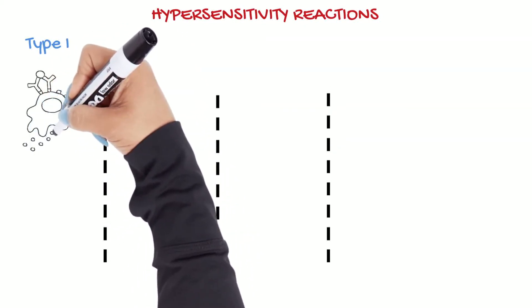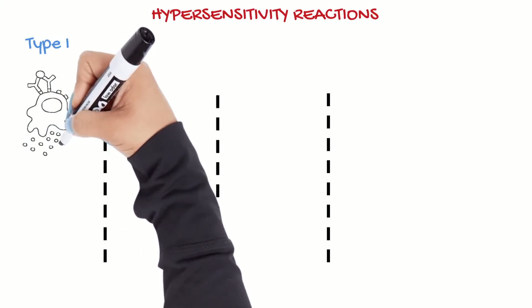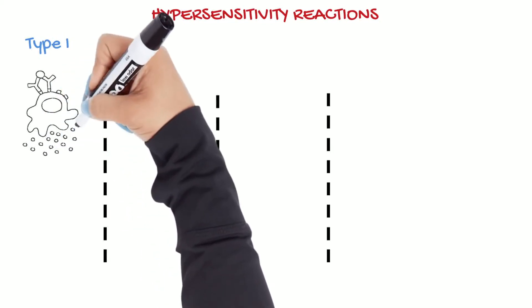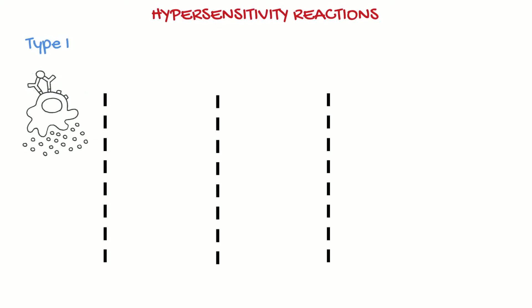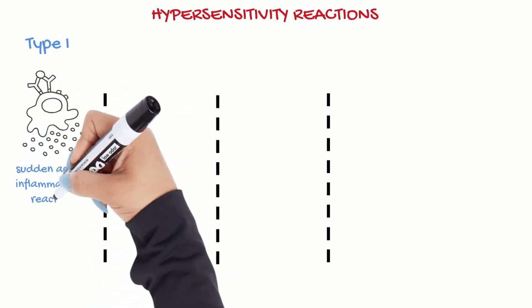The mast cells are then triggered to release the contents of their lysosomes into the surrounding tissues. Mast cell responses are extremely rapid. Granules are released within seconds after antigen binds to IgE, thus there is a sudden acute inflammatory reaction.